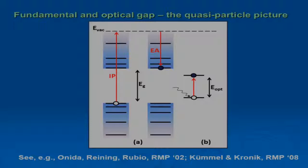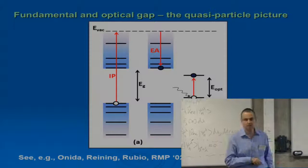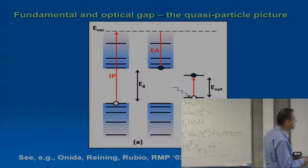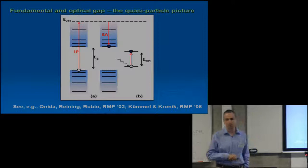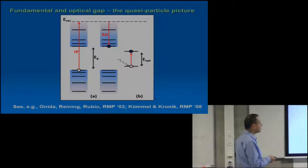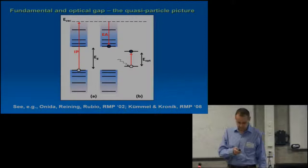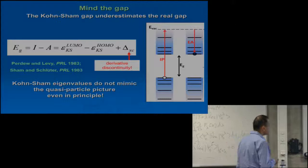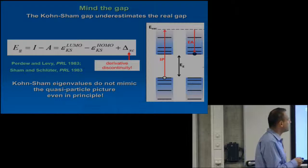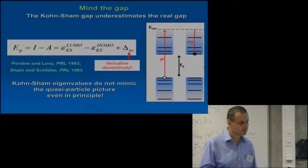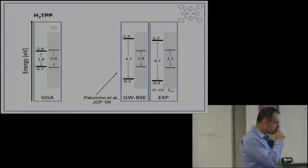As you already heard from Marty, there are two different gaps to think about. One is the fundamental gap, which is the difference between the ionization potential and the electron affinity. Then there's the optical gap, which is the minimum energy required to create single particle excitations. The exact Kohn-Sham gap is generally different than the fundamental gap because of this derivative discontinuity. Therefore, Kohn-Sham eigenvalues don't mimic the quasi-particle picture, even in principle.